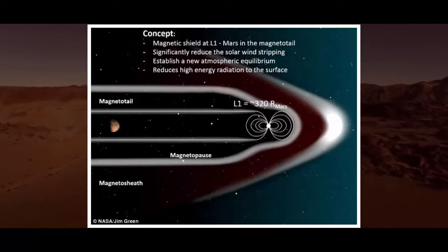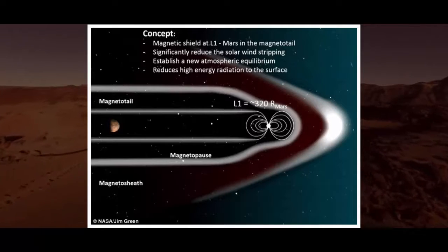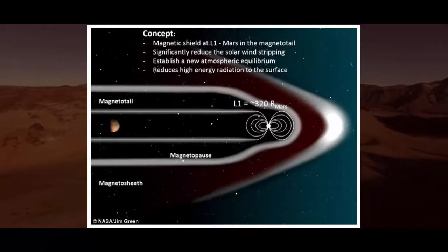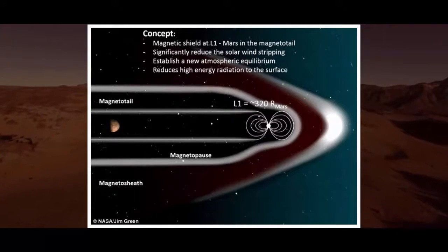Then, the magnetic field died out roughly 4.2 billion years ago, and the Martian atmosphere was slowly stripped away over the next 500 million years. Gone was the warm, wet Mars of the past.